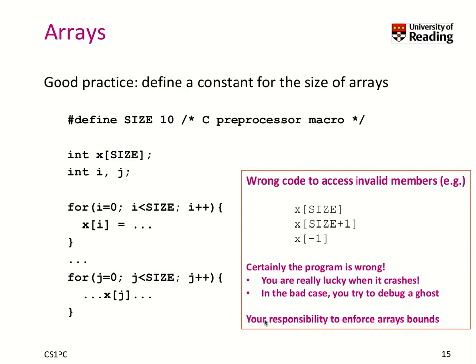It's your responsibility to enforce array bounds. The compiler will not help you like it would in Java. The reason is performance — it's a deliberate choice not to check bounds. You know what you are doing, so you will make sure you access your array with a proper index.